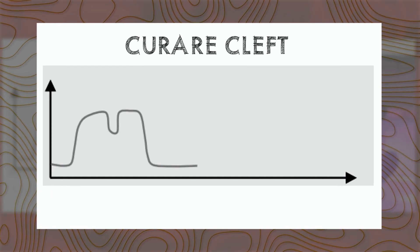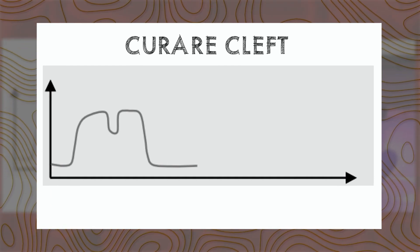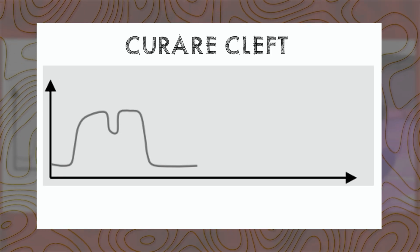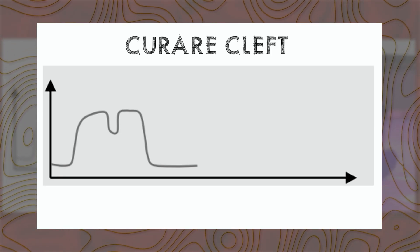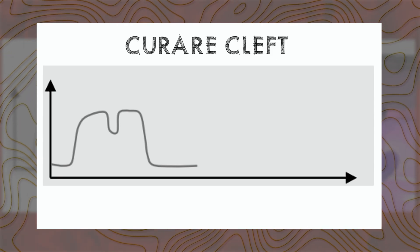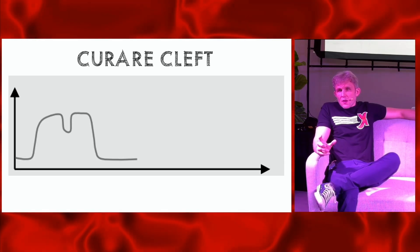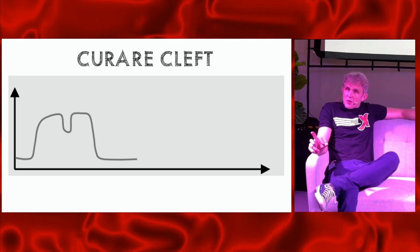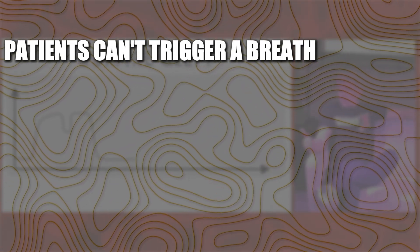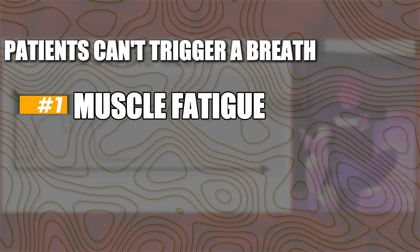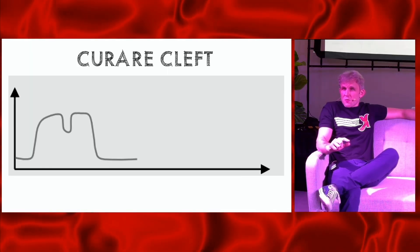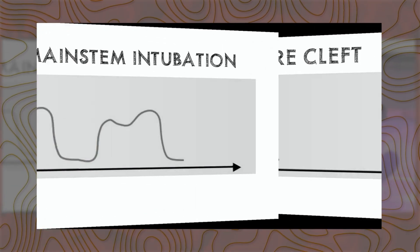The curare cleft represents an ineffective inspiration, mostly seen on the ventilator. You get your flat line, rapid rise to plateau, but halfway through the plateau there's a pull downward — the patient is trying to generate a breath, sucking in but unable to complete a full inhalation, so CO2 returns briefly before the next breath. This usually indicates vent dyssynchrony and should prompt reassessment — causes include muscle fatigue, muscle wasting, a trigger that's too low, or PEEP that's too high.